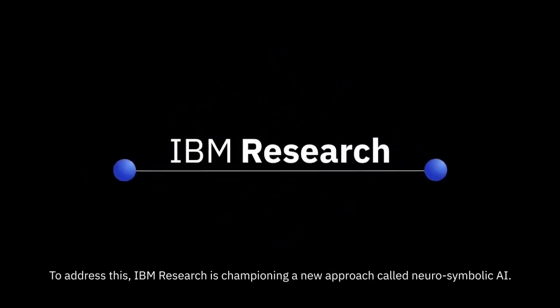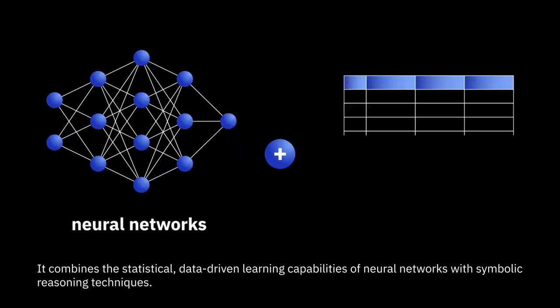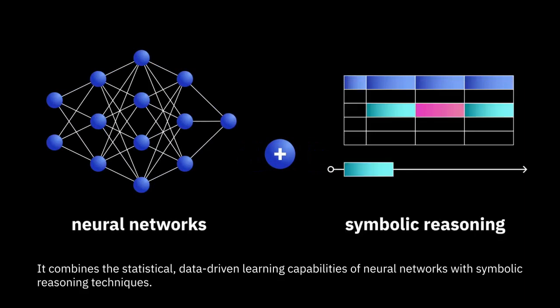To address this, IBM Research is championing a new approach called Neurosymbolic AI. It combines the statistical, data-driven learning capabilities of neural networks with symbolic reasoning techniques.